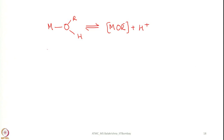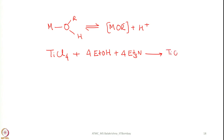For example, if we consider titanium tetrachloride and that is treated with 4 equivalents of ethyl alcohol in presence of a base such as triethylamine, it can give tetraethoxy titanium, and of course here triethylammonium chloride is also formed. Examples of this type of compounds are also known.